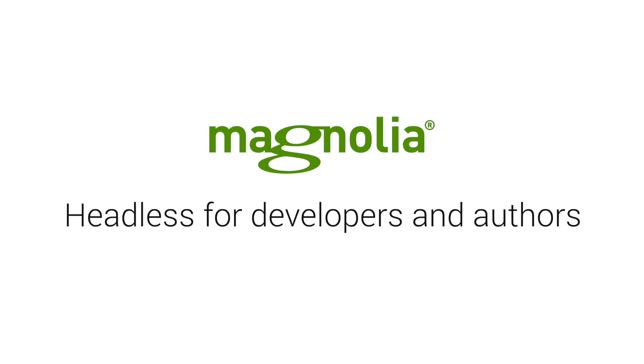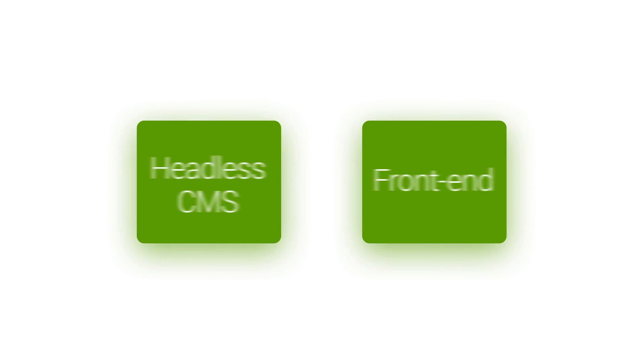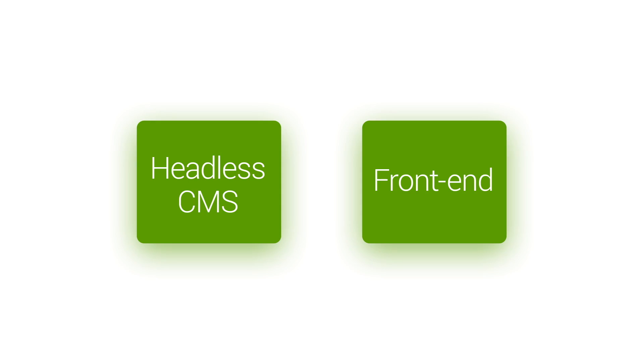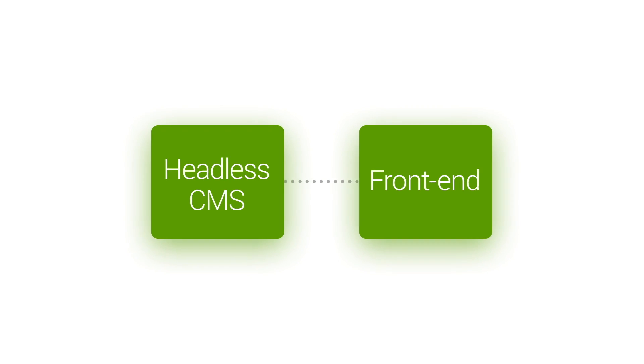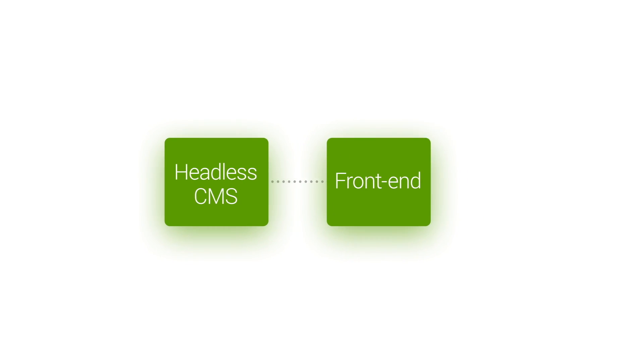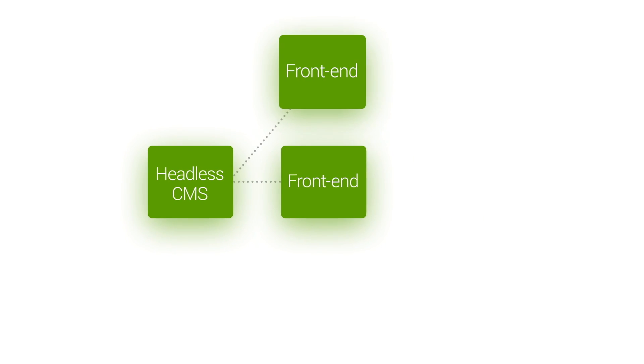Magnolia: headless for developers and authors. In the headless CMS approach, the features of a full CMS are split into different systems. A headless CMS has the tools for authoring content, but instead of generating a website itself, it delivers pure content via API to other systems which format and display it.